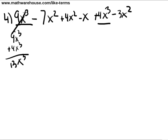So we can say 9x cubed plus 4x cubed is going to give us 13x cubed. Let's now cross them out so we can keep track of what we've used. Again we've got a negative 7x squared, 4x squared, and a minus 3x squared.